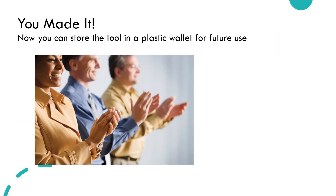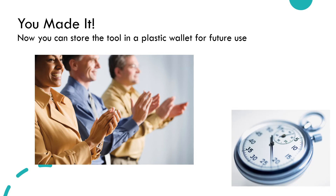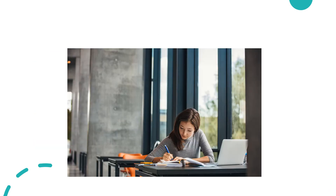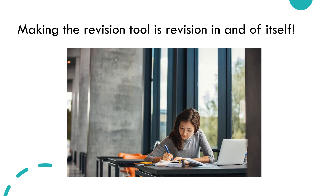You have now made an interactive revision tool. This should not have taken more than 20 minutes to create, but now that you have made it you can use it to help you remember different characteristics of alpha, beta and gamma radioactive decay. Making this is revision in and of itself — you are reviewing the source material and interacting with it as you read and copy the key features.